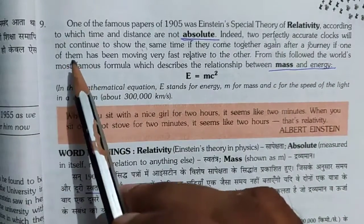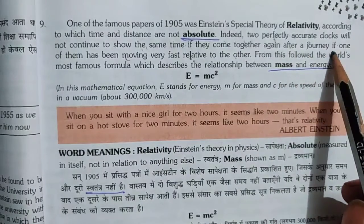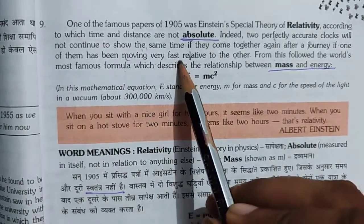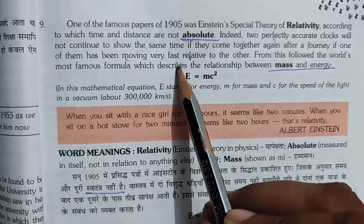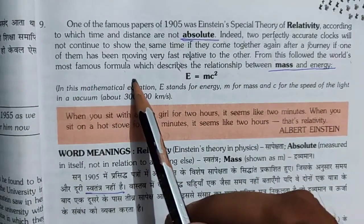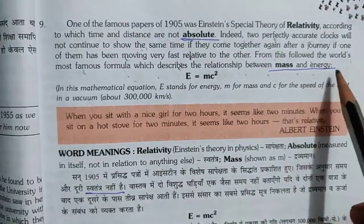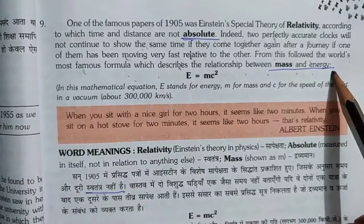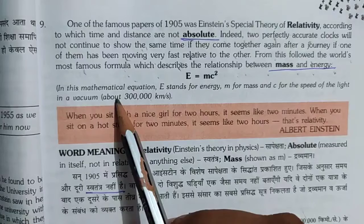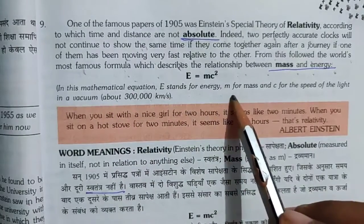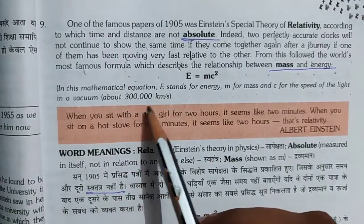If they come together again after a journey, and if one of them has been moving very fast, they will show different times. From this followed the world's most famous formula. In this mathematical equation, E stands for energy, M for mass, and C for the speed of light in a vacuum — about 3,00,000 km per second.